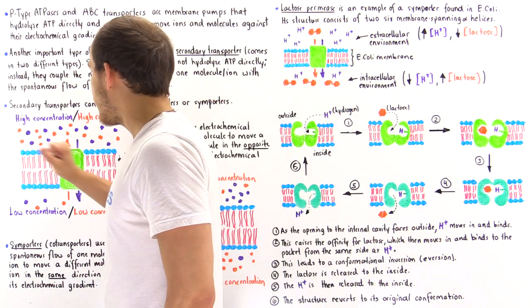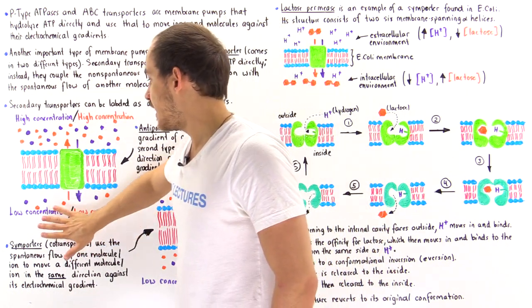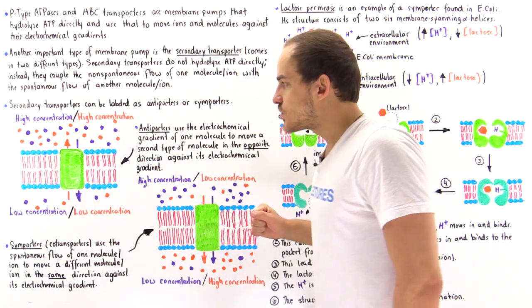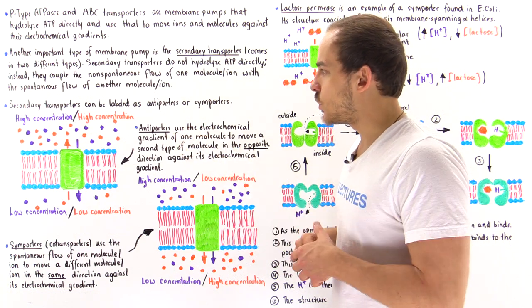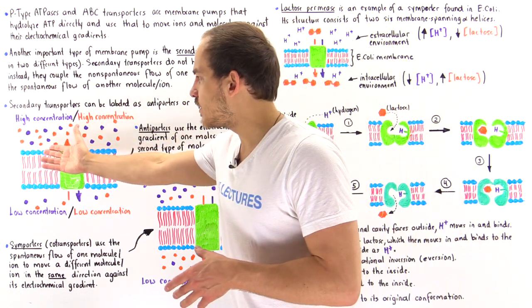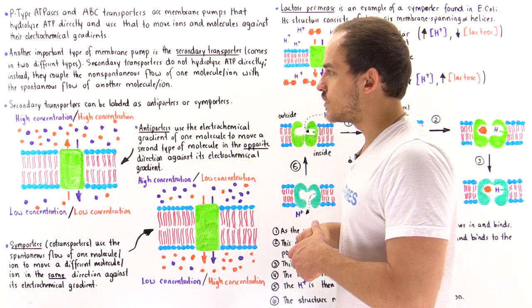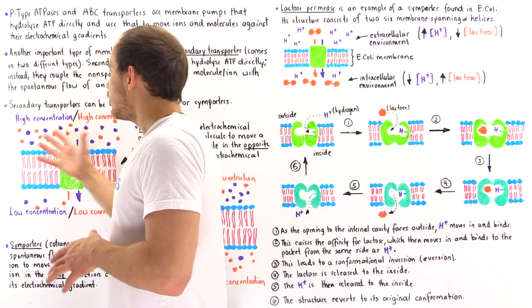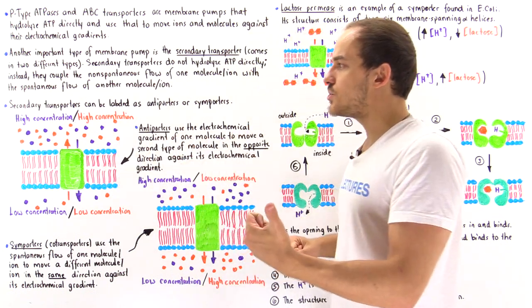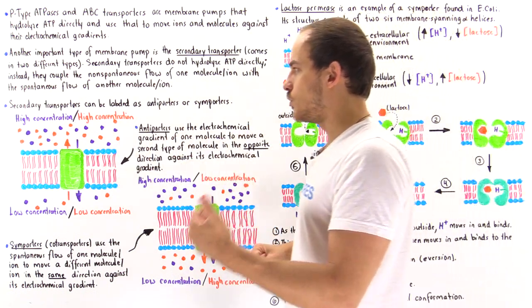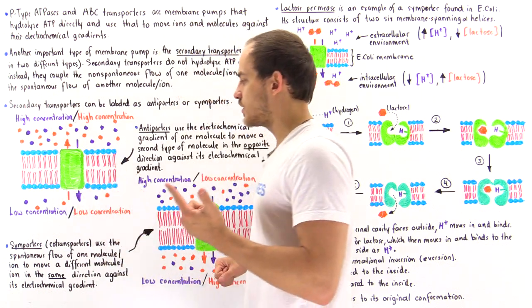We have the membrane — let's say this is the outside and this is the inside of the cell. We only have two types of molecules to consider: the purple molecules and the orange molecules. On the outside of the membrane, we have a high concentration of both the purple and the orange molecules.